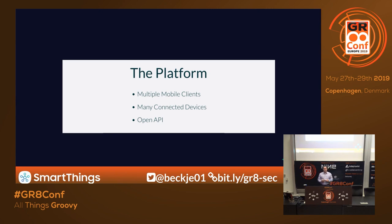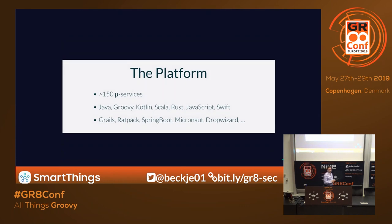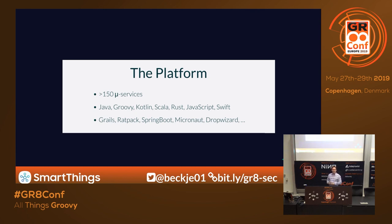We have multiple mobile clients, many connected devices, and an open API to allow anyone to connect to us. The platform itself has more than 150 microservices in production right now. It is a mix of Java, Groovy, Kotlin, Scala, Rust, JavaScript, and Swift — at least more than one service running in each. We have a number of JVM frameworks. That gives you an idea of the expanse we're trying to deal with, and when it comes to authentication and authorization, you can't just use a single library everywhere.